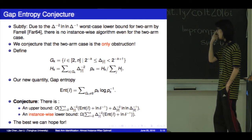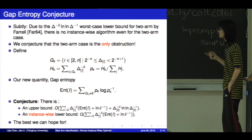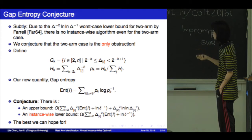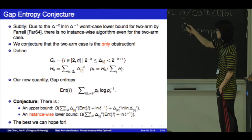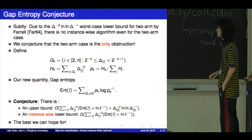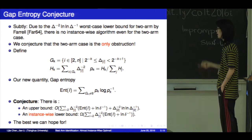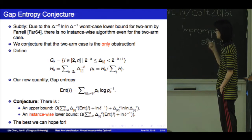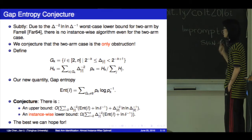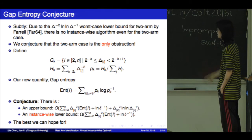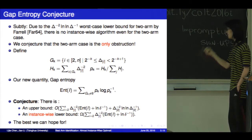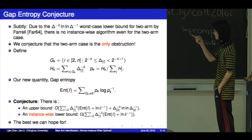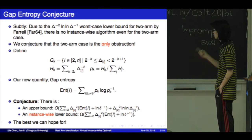Now, we need to define some terminology. Let g_k be the arms whose gap belongs to this range. We define h_k to be the sum of the inverse squares of those arms in g_k, and p_k to be the normalized version of h_k. We define the new quantity — the gap entropy — as the entropy of the probability distribution p_k.